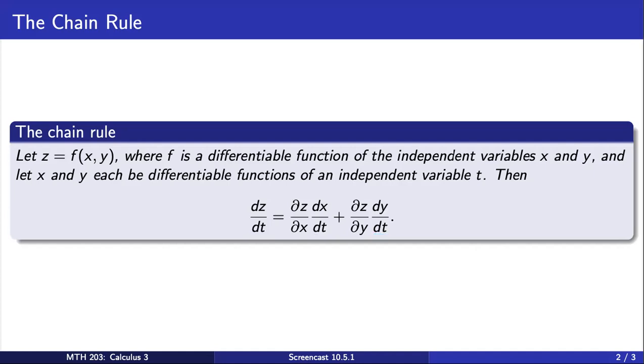Note that the chain rule here is given in Leibniz notation, which makes it easier to keep track of the variables and the dependencies. And the statement of the chain rule here is very specific to the situation given, where z depends on x and y, and x and y depend on t.